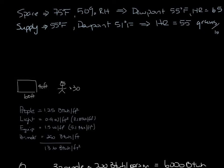Now we can calculate the airflow needed to handle the latent load, which is 6,000 BTU divided by 0.69 times the difference between the space humidity ratio and the supply air humidity ratio, 65 minus 55, and that equals 870 CFM.